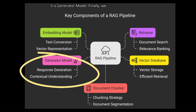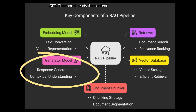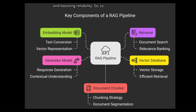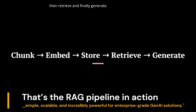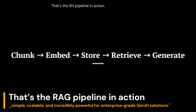Step 5 is the Generator Model. Finally, we pass the retrieved chunks along with the original query to a language model like GPT. The model reads the context and generates a grounded, informative response, minimizing hallucinations and boosting reliability. To summarize: chunk, embed, store, retrieve, and finally generate. That's the RAG pipeline in action.